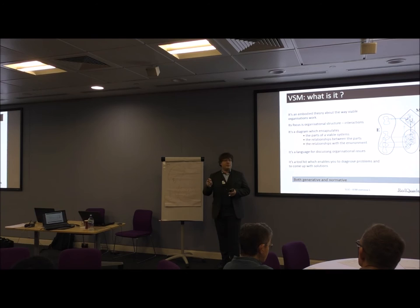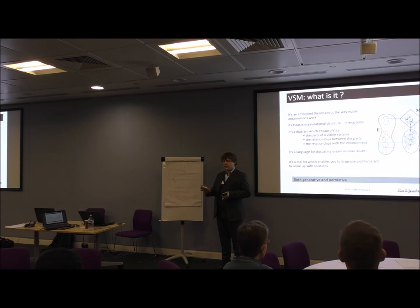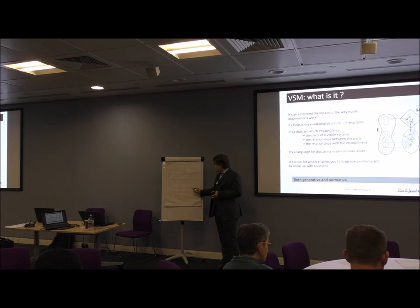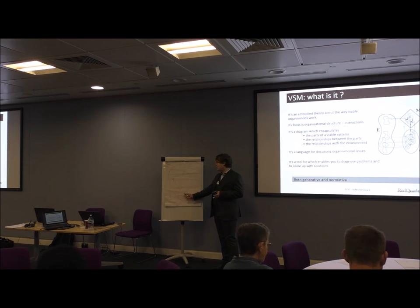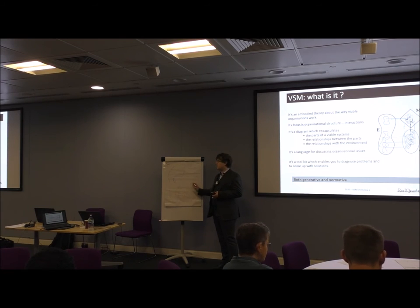The reason we do this introduction is that people throughout the day might refer to systems one, two, three, three-star, four and five — bits of the VSM — because the heritage of SCIO is quite strongly around the viable systems model. So you need what we call a system two to manage the day-to-day automatic, ongoing, basic interactions between the system ones so that they don't trip over each other. At that stage you've got an organisation that almost looks minimally viable and is able to respond to the environment and balance itself in some kind of way.